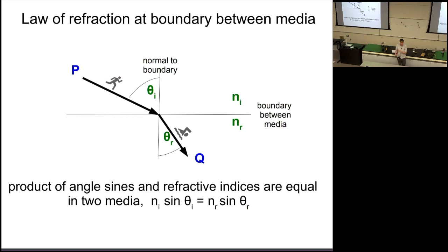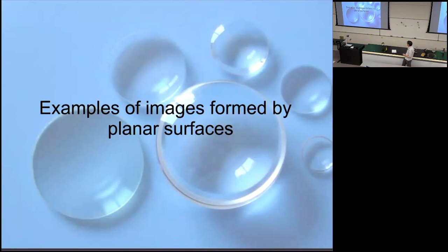The law of refraction states that the product of the refractive index and the sine of the angle on the incident side equals the product of the refractive index and the sine of the angle on the refracted side. If light travels from lower to higher refractive index, it's bent towards the normal; from higher to lower, it's bent away from the normal.